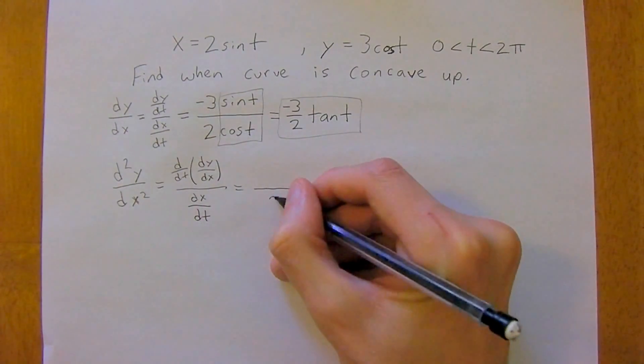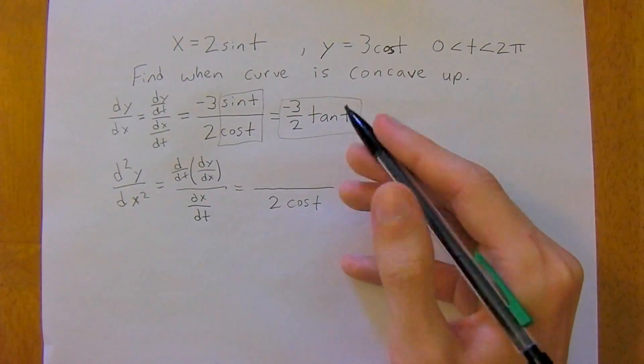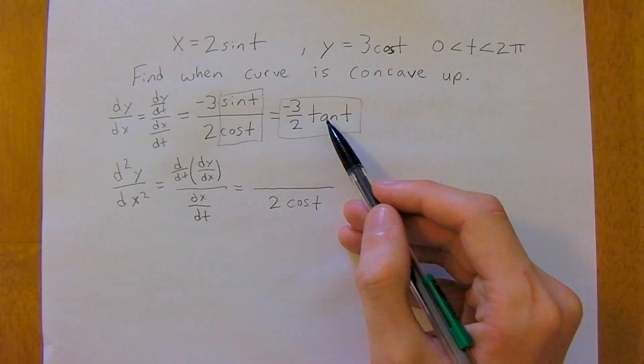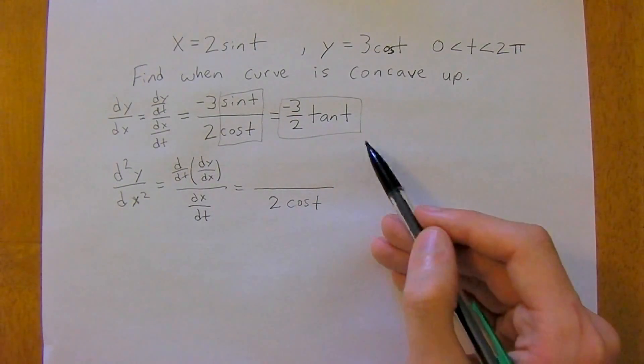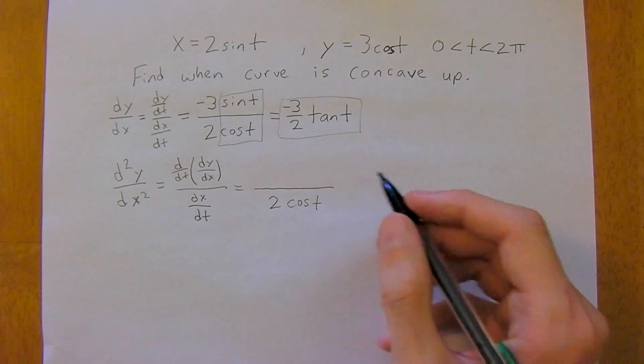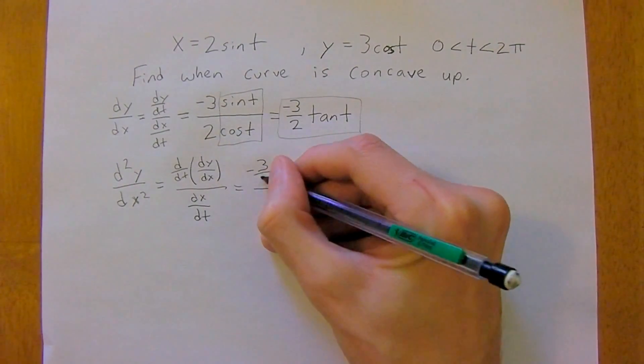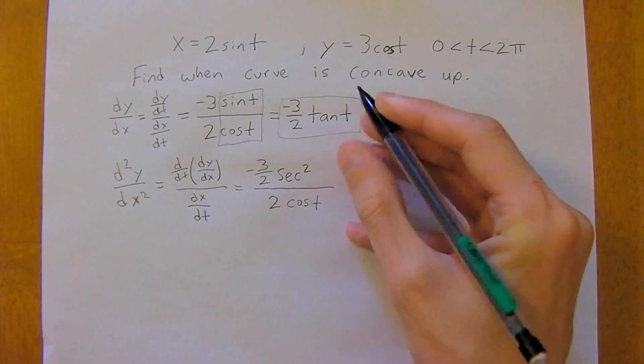So we already have the bottom, 2 cosine of t. And now we just need to take the derivative of this. So hopefully you remember the derivative of tan t is secant squared t. So this will give us negative 3 over 2 secant squared t.